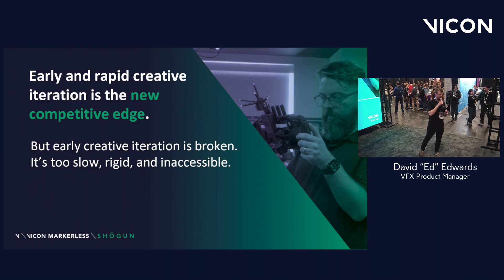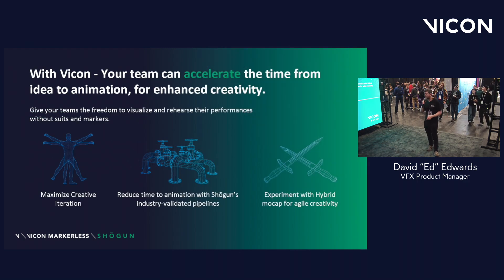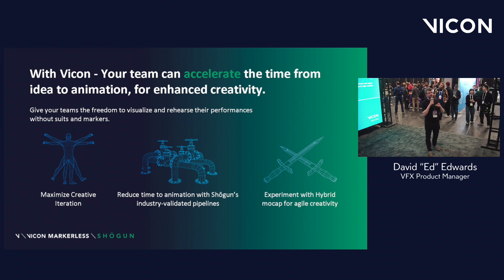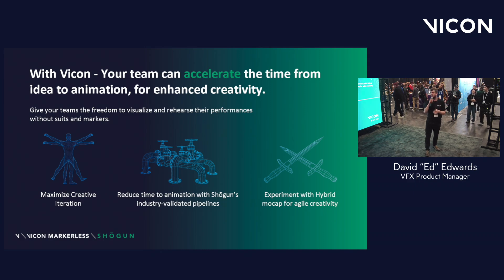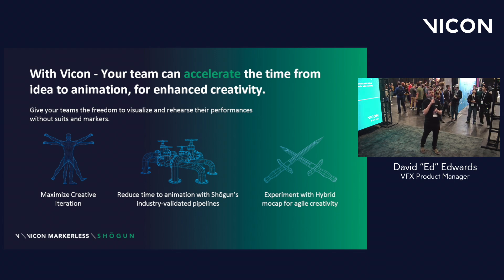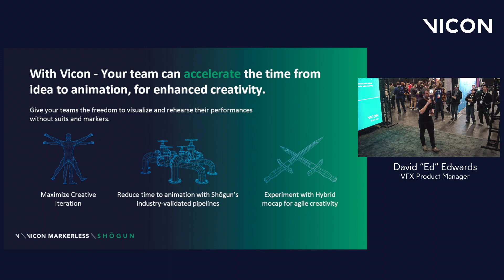From a product perspective, there are three key areas. We want to maximize creative iteration. We want to reduce the time it takes to get content-ready animation in the process. And we also want to give users the ability to experiment with hybrid approaches — being able to use the best of optical motion capture and markerless motion capture, combining the two to get the best output possible.